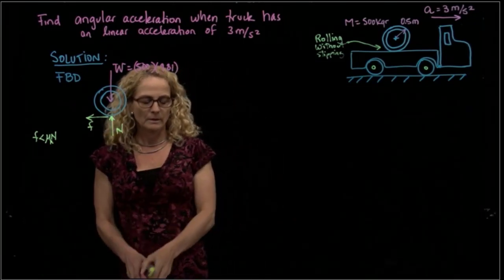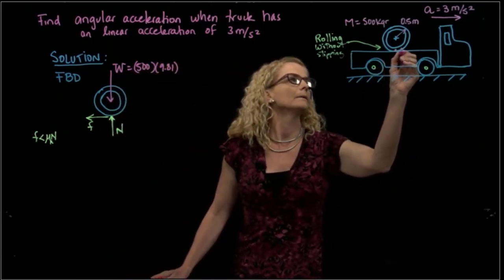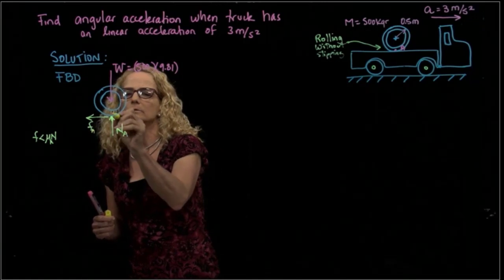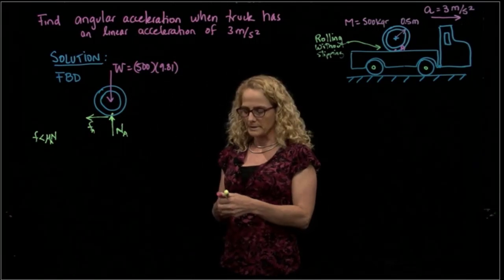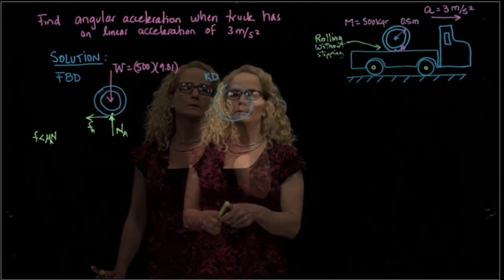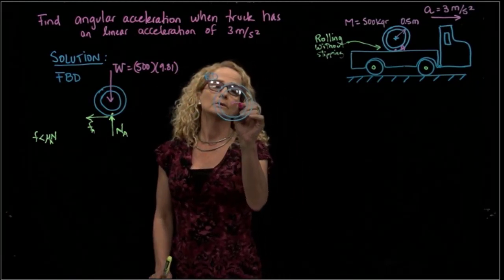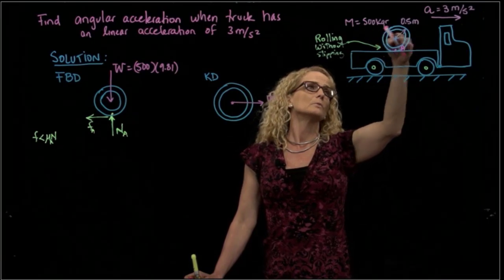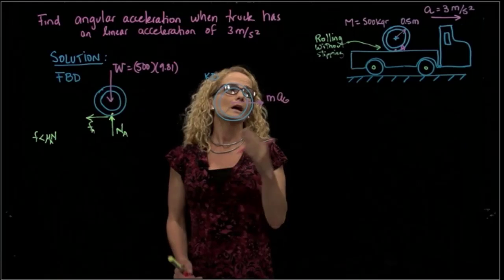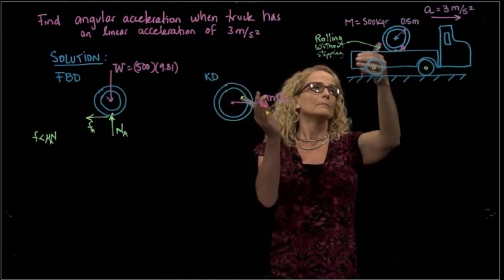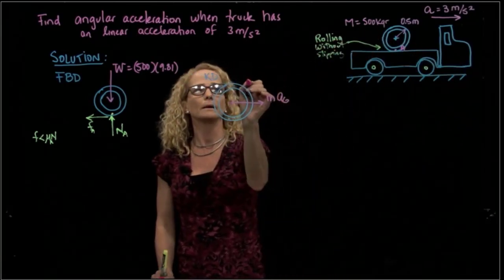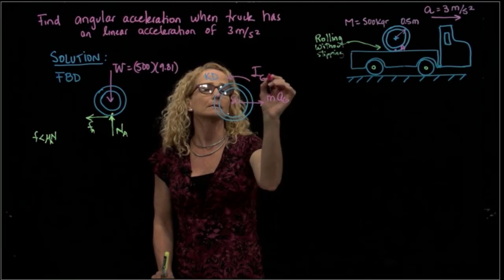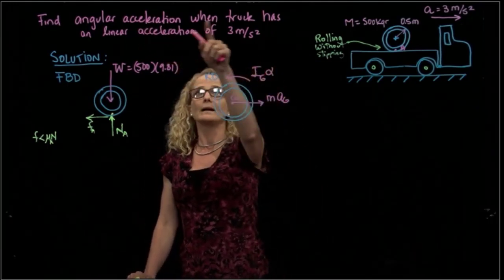Let's call the contact point A, with normal force N_A and friction force F_A. For the kinetic diagram, we draw the same cylinder. Since the truck moves forward, the cylinder moves forward as well, giving us mass times acceleration. The cylinder will also rotate backward, so we have the rotational inertia about the center of mass times alpha, where alpha is the variable we are asked to find.